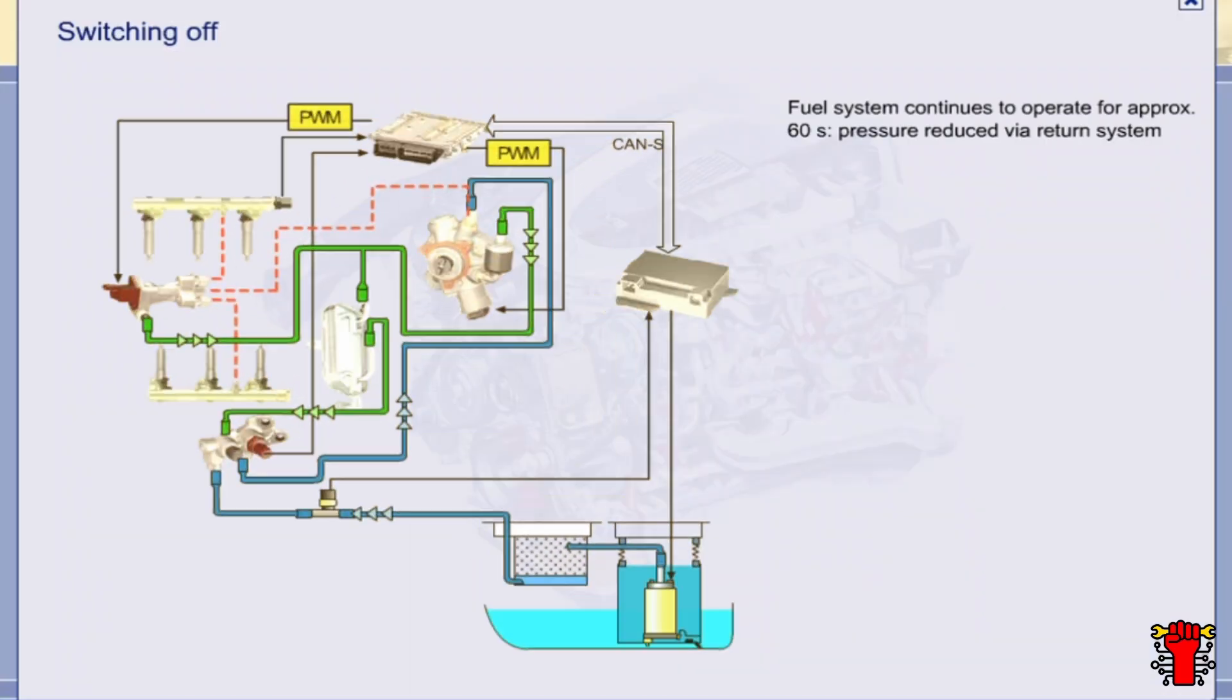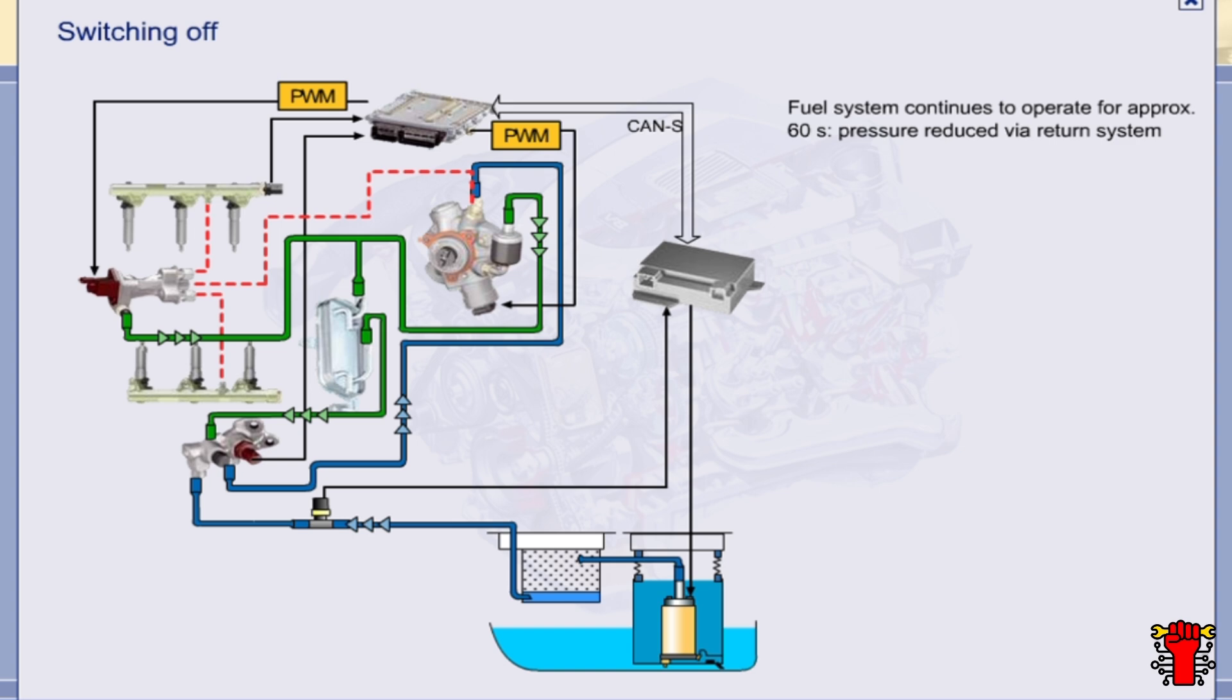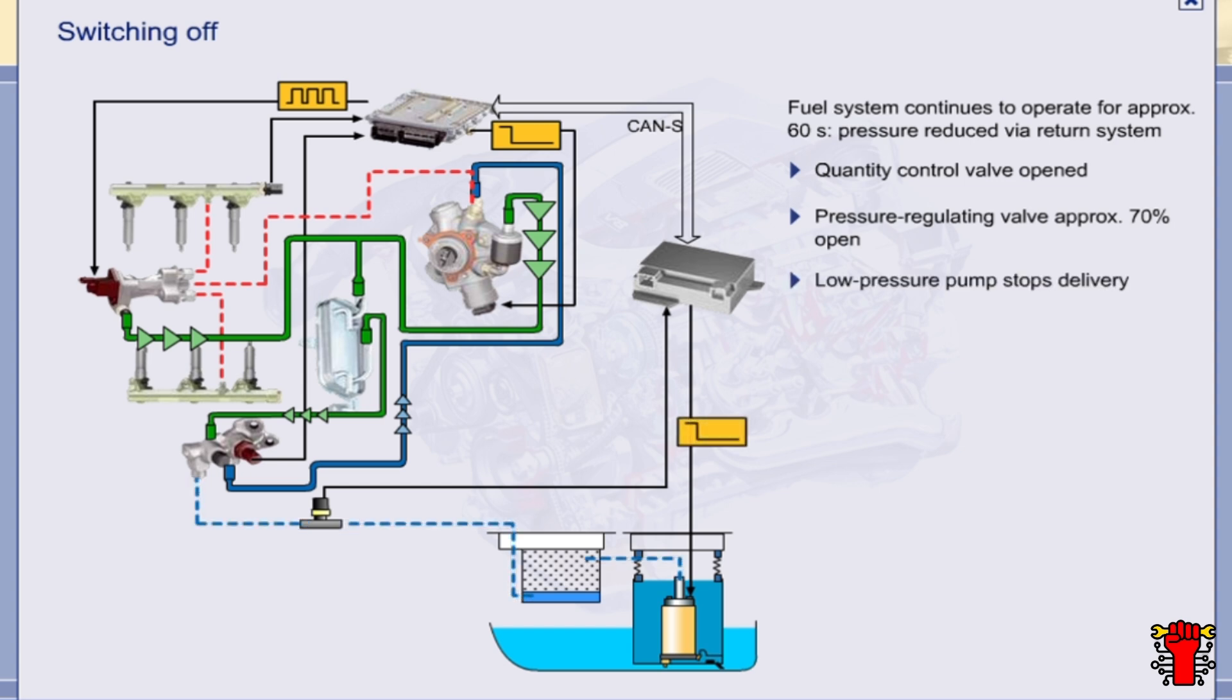In the switching off operating state, the pressure regulating valve and the quantity control valve are operated for a further 60 seconds or so to release the pressure via the return line. During this period, no current is applied to the quantity control valve. In other words, the valve is open. By contrast, the pressure regulating valve is actuated with a pulse duty factor of approximately 70%. In other words, it is held approximately 70% open. The low pressure fuel pump is not actuated during the switch off procedure.